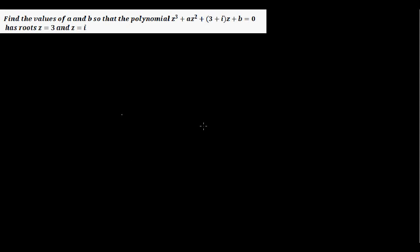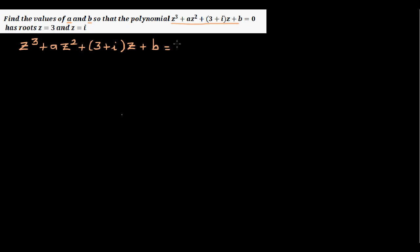This is a question on complex numbers: find the value of a and b so that the polynomial z cubed plus az squared plus (3 + i) times z plus b equals 0 has roots z = 3 and z = i.